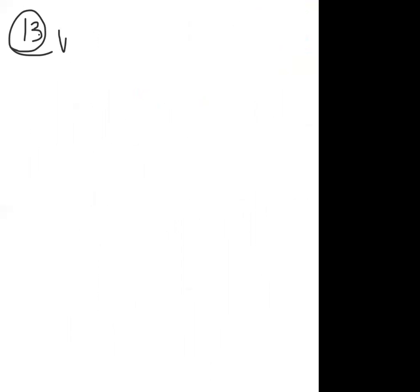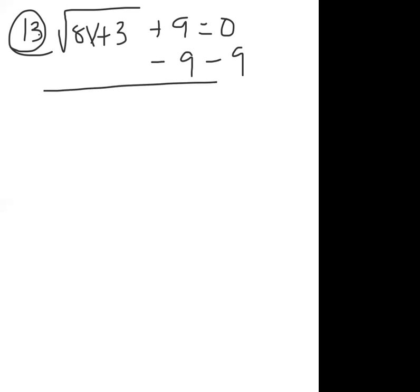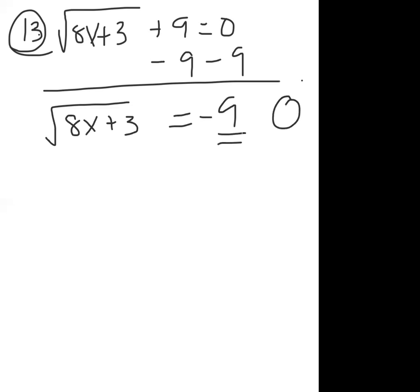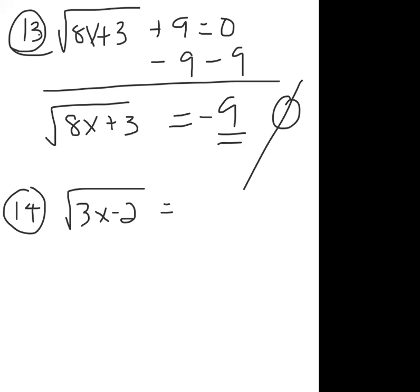Problem 13: sqrt(8x+3) + 9 = 0. Subtract 9 from both sides: sqrt(8x+3) = -9. This is that exception — the square root cannot equal a negative value. Therefore, there is no solution.